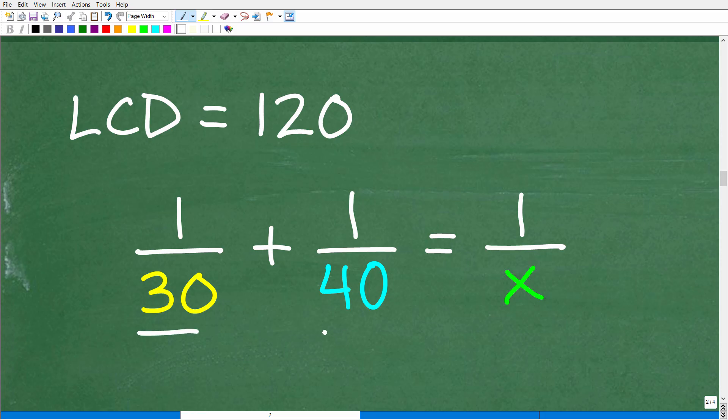What's the lowest common denominator between 30, 40, and X? Well, really, we don't need X here involved. What we do need is the LCD between these two numbers just to clear these fractions. So the LCD is 120. That is the lowest common denominator between these two numbers.